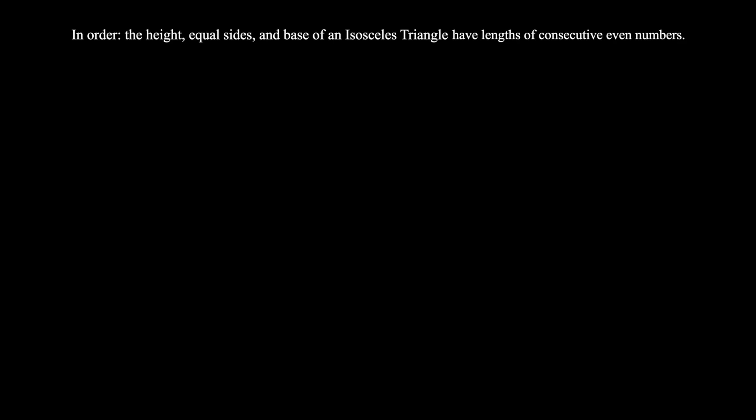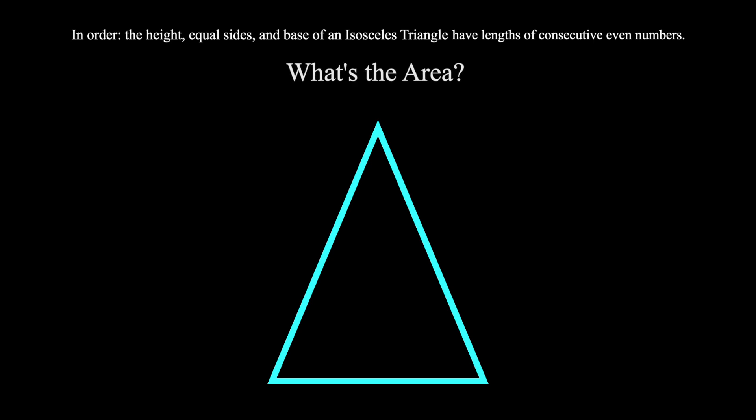Here's the problem. In order, the height, equal sides, and base of an isosceles triangle have lengths that are consecutive even numbers. What's the area of this triangle?